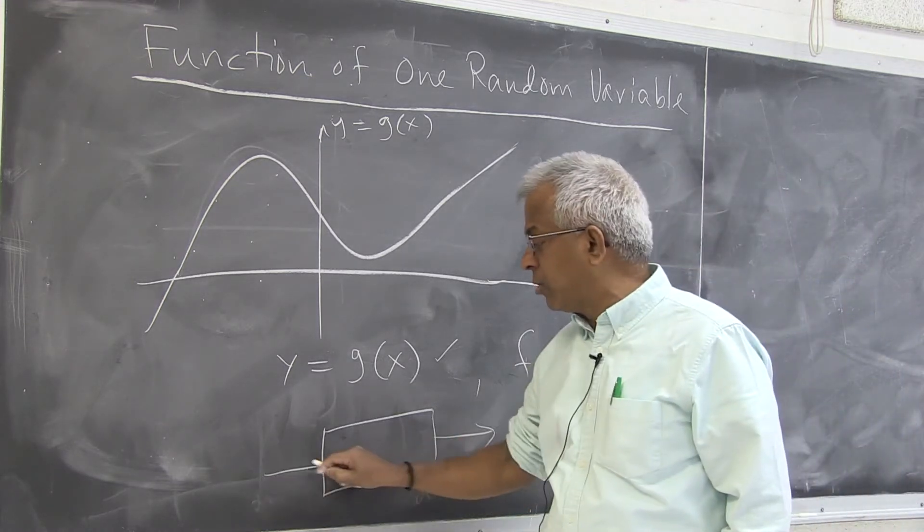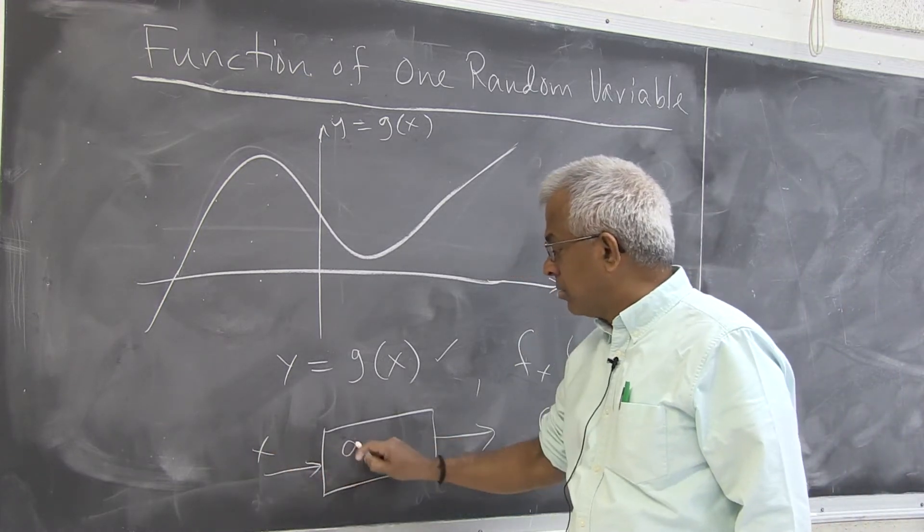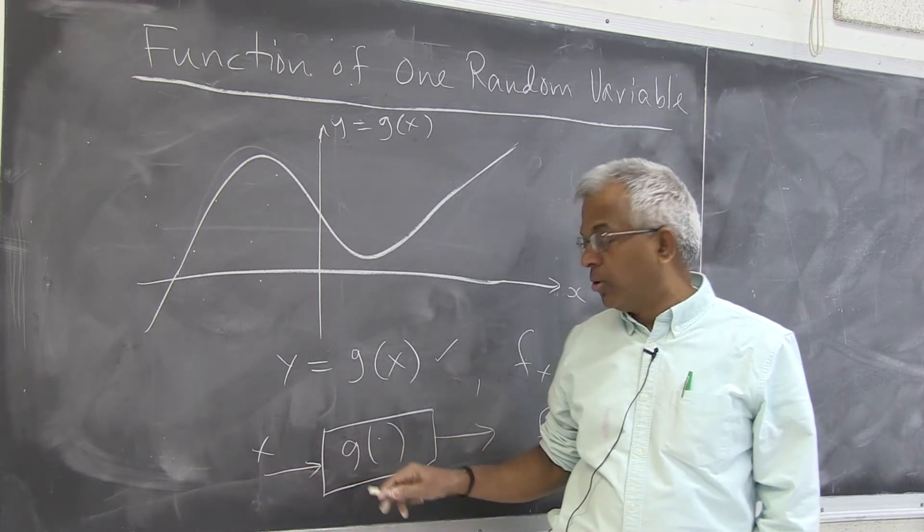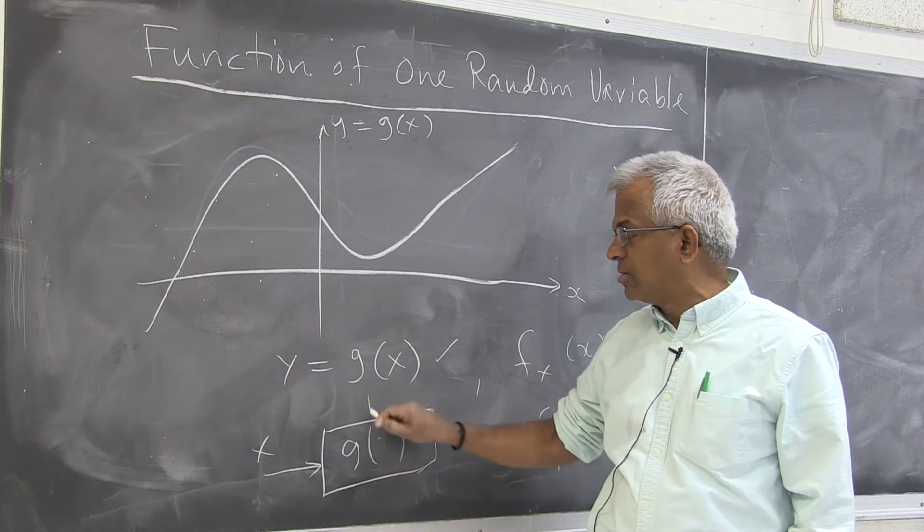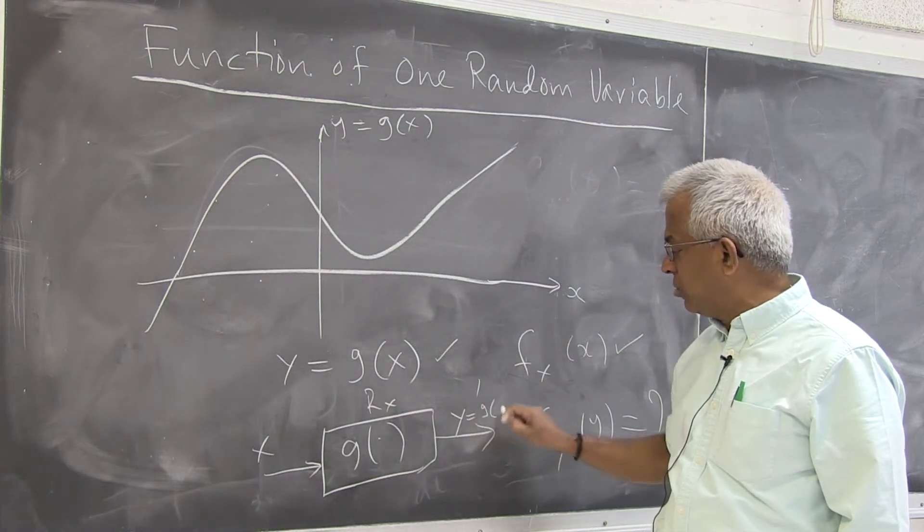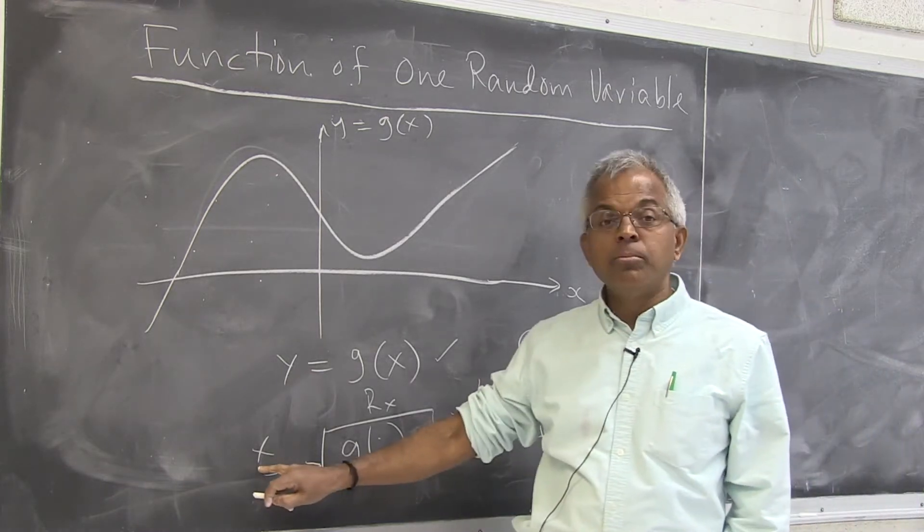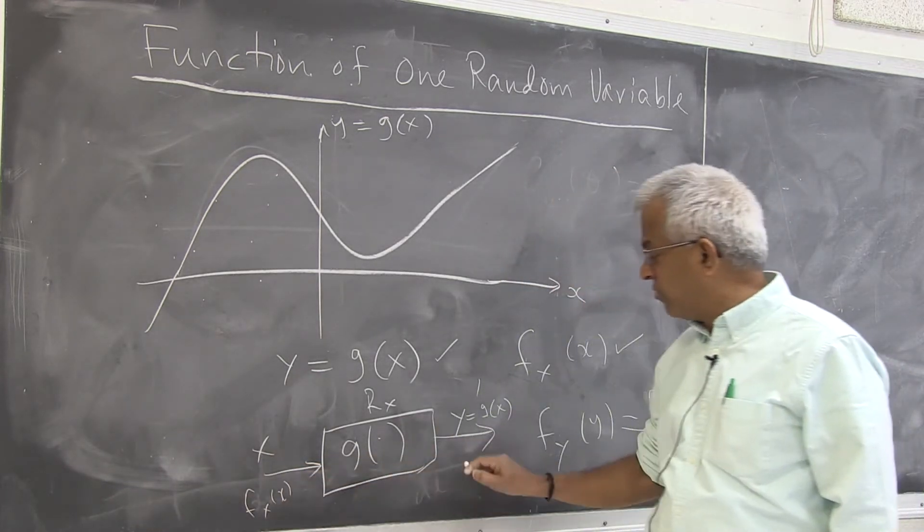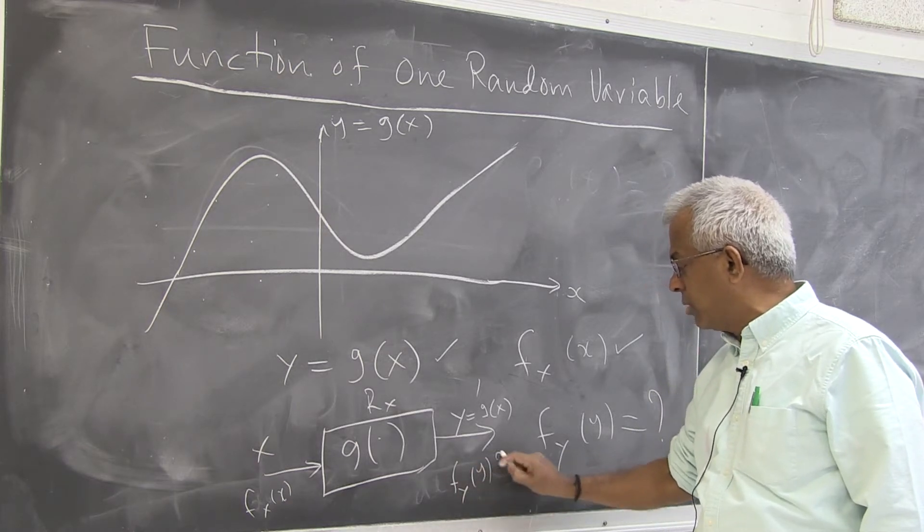So one way to conceptualize this is, at least in electrical engineering, you have some signal going in through some system, let's say a receiver, and the output is y, g(x). So knowing the input density function f_x(x), we want to find the output density function f_y(y).